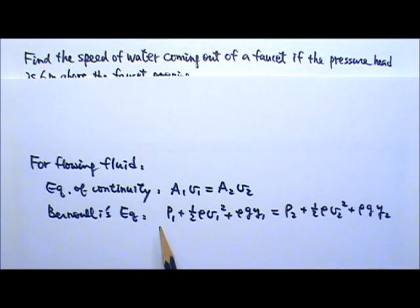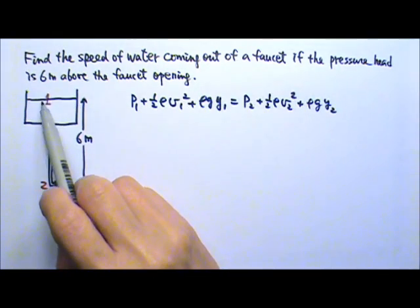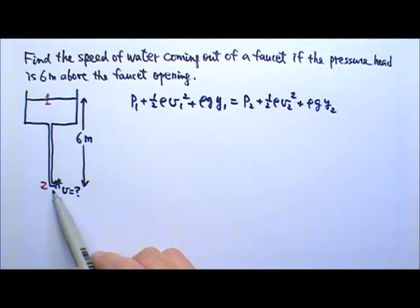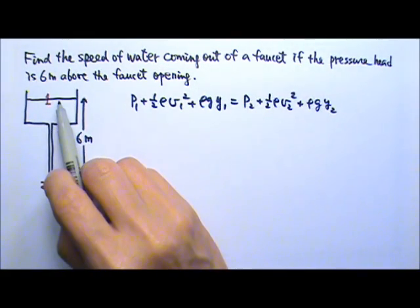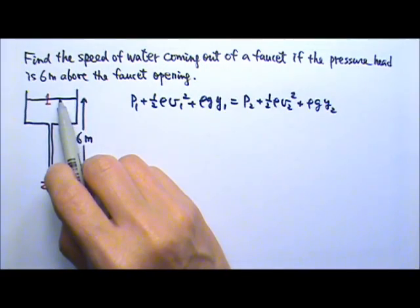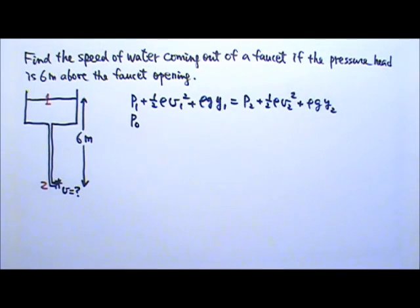In this case we are going to use Bernoulli's equation. I am going to call this part of the fluid 1 and this part of the fluid 2. So P1 is the pressure right over here. Now this water is exposed to the atmosphere. So the pressure up there is the atmospheric pressure.